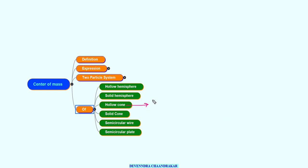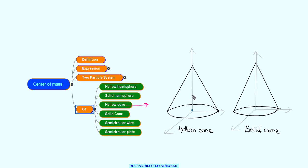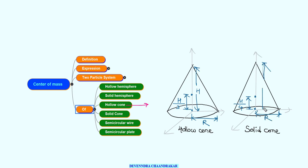For a hollow cone with height H and base radius R, where mass is uniformly distributed, the center of mass is at a distance H/3 from the base center. So its coordinates are (0, H/3, 0). For a solid cone with height H and radius R, the center of mass is at H/4 from the base, giving coordinates (0, H/4, 0).